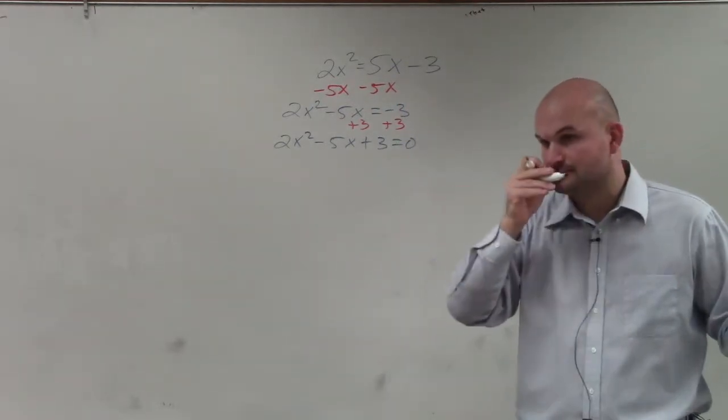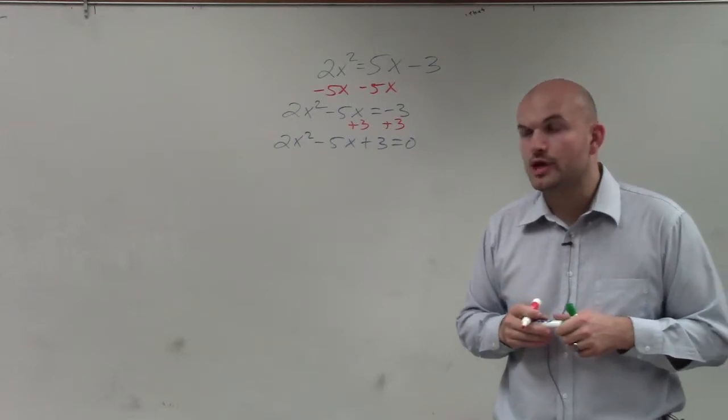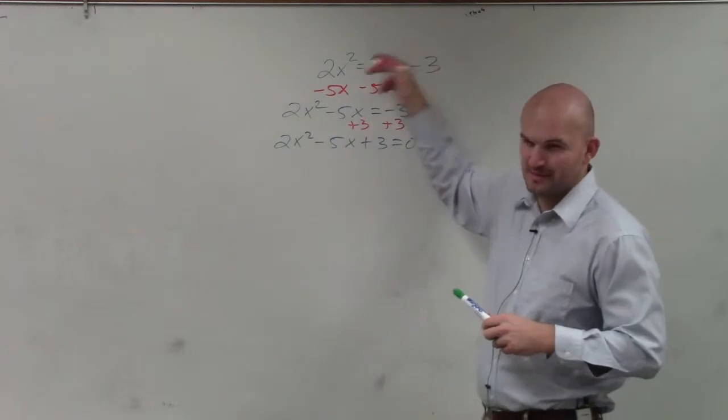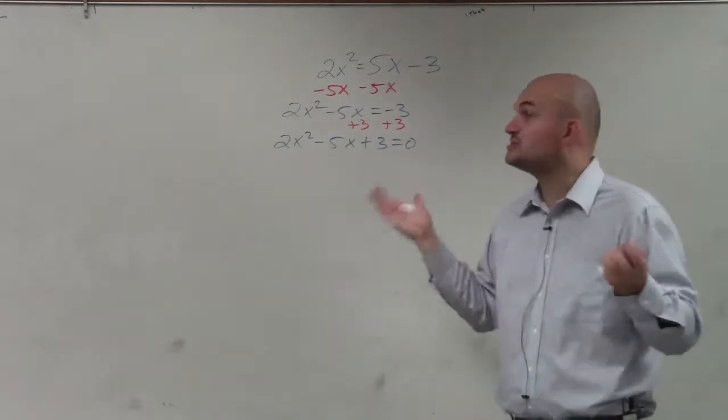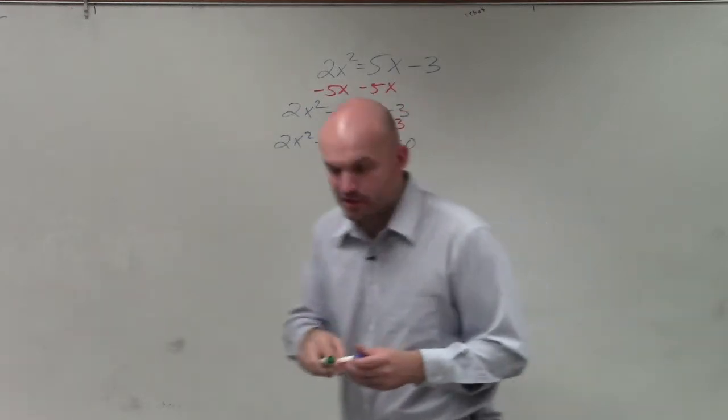Student asks: Will you mark one if we don't set to 0 but continue to do the positive? No. As long as you determine the right a, b, and c, you could use the opposite of those too. That's pretty fine. I'm just saying where mistakes are made, students make mistakes on that part. So that's why I do it. But no, you don't have to do it.